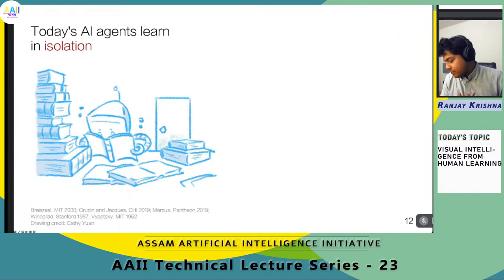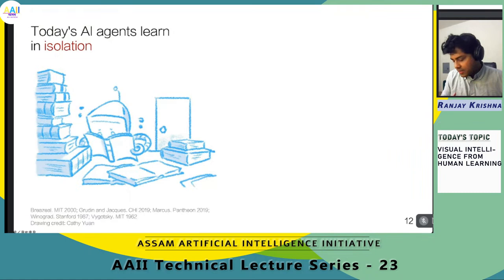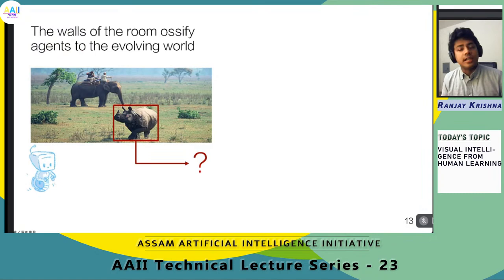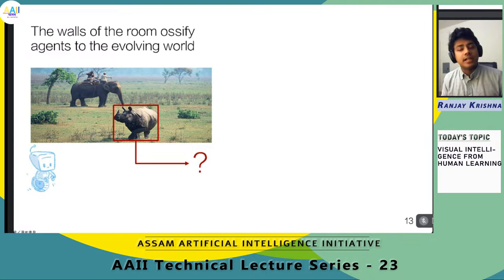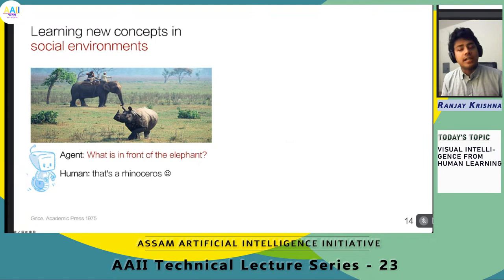The reason we don't have machine learning models that can operate under every circumstance is that whenever they see new concepts missing from training data, they completely fail. Today's predominant methods are akin to locking agents alone in a room full of books — large volumes of manually labeled training data like ImageNet, or scraped internet data. While these models have done pretty well, they still struggle with novel situations. When a concept is missing, agents have no means of acquiring it. We need to move these agents outside into existing social environments so they can learn through social interactions.